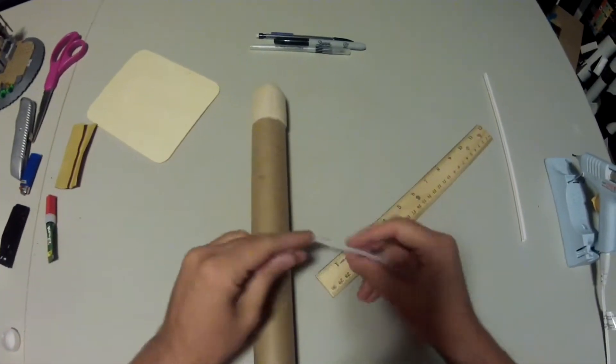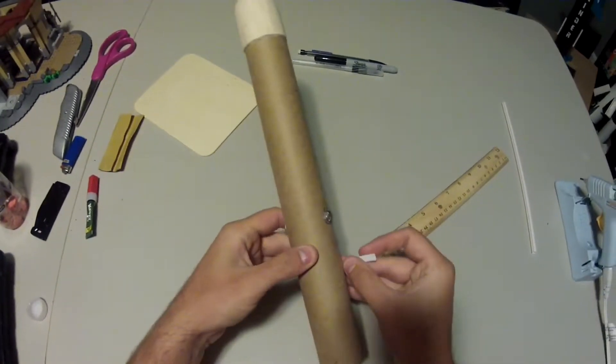Thicker balsa wood is heavier but it means it won't break as easily upon touchdown or when you're just handling your rocket.